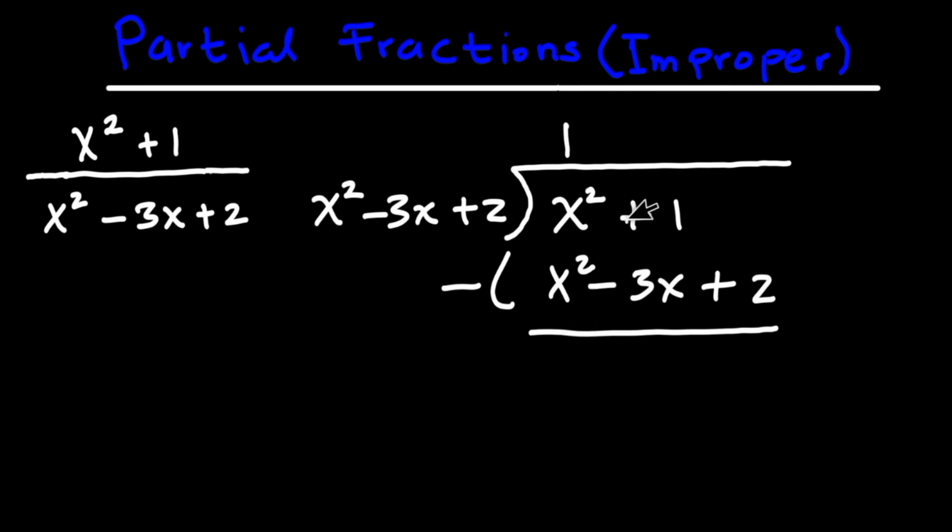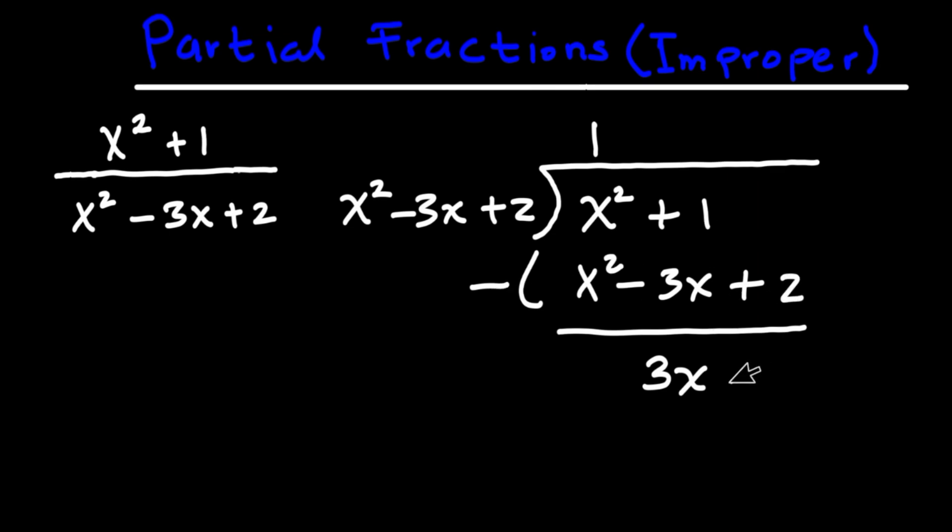Then you notice that we don't have an x term right here, meaning the x term here is just 0. So we have 0x minus minus 3x, that is going to be positive 3x. Then 1 minus 2, that is of course going to be negative 1.